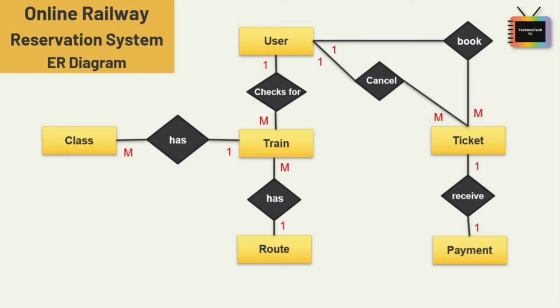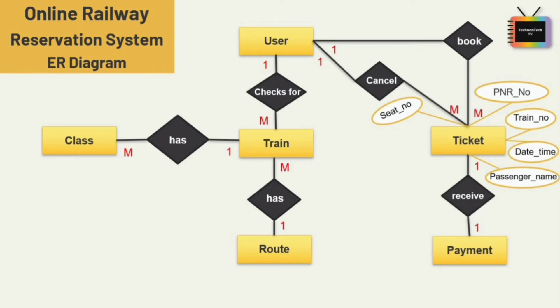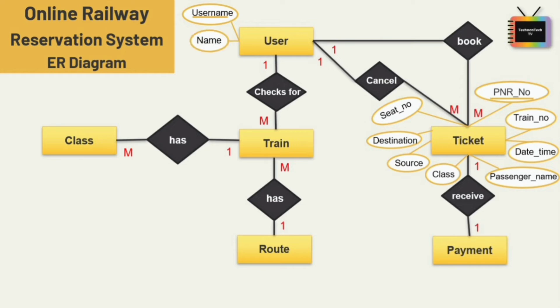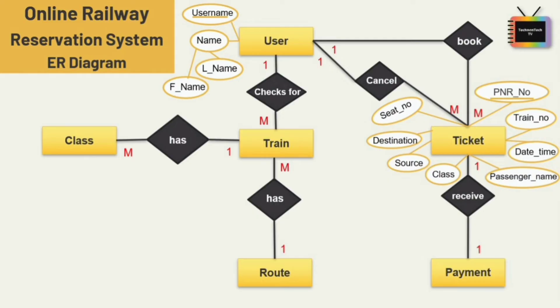Now let's look at the attributes. For the ticket entity I am adding eight attributes: PNR number, seat number, train number, passenger name, date and time, class, source, and destination. PNR number is the primary key, and train number can be considered a candidate key. For the user entity, the first attribute is username, which is the key attribute, and the second is name, which I am using as a composite attribute.